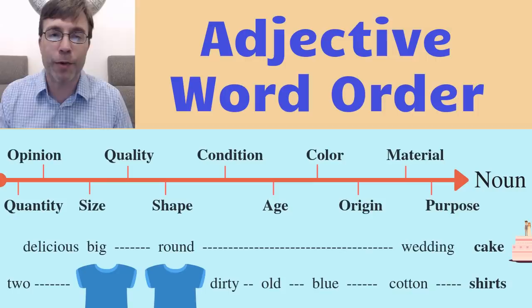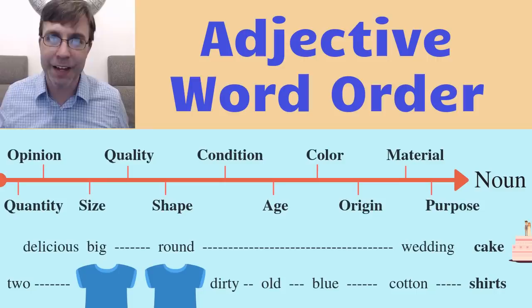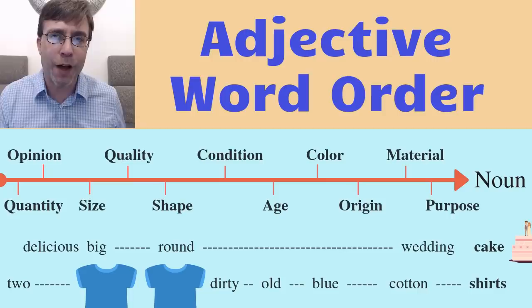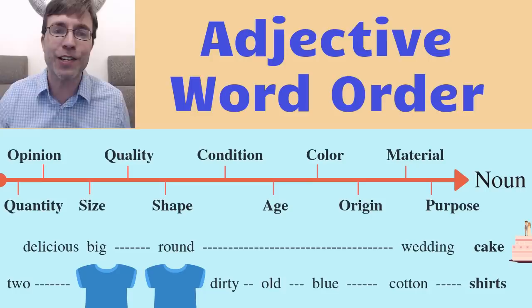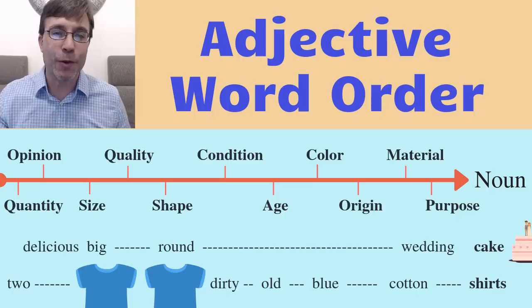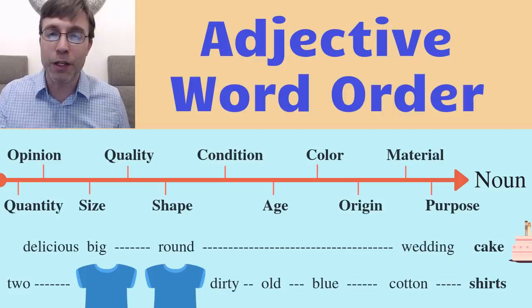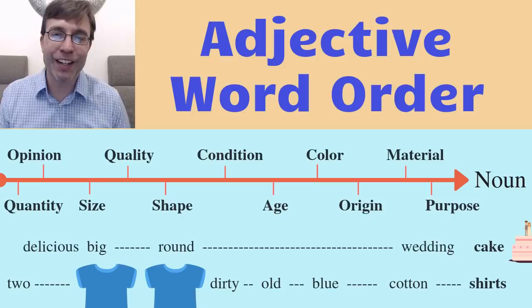So in that natural order, a delicious big round wedding cake would be the correct order of those adjectives — opinion, size, shape, and purpose. Most of the time it's great to use two adjectives; it's very common to use three. The more adjectives you start to throw in, it could sound a little awkward. That example was just as a reference. Another example: two dirty old blue cotton shirts — that uses quantity, condition, age, color, and material.